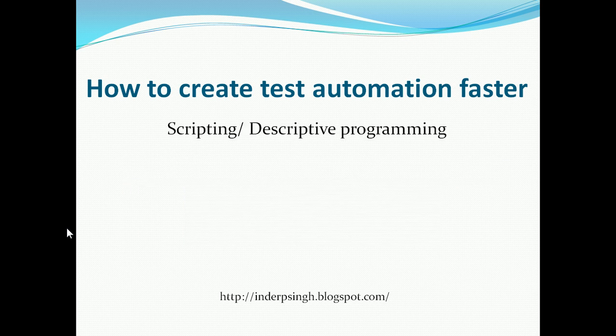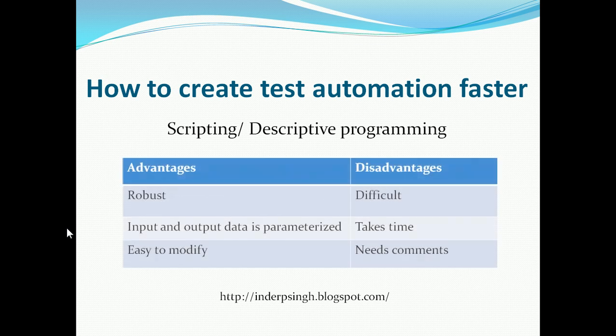The other approach is scripting or descriptive programming. Its advantages are that it is more robust than a pure Record and Run script, and we can parameterize the input and output test data — meaning inputs can be put in an external data source. The script becomes easy to modify. But the disadvantage is that it requires scripting or programming knowledge, takes much more time to create, and needs comments in order to understand what the script is doing.